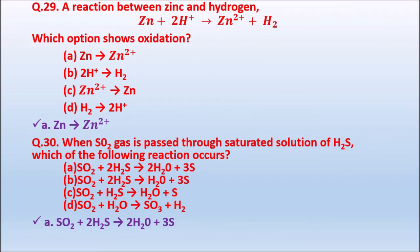Question 29: In the reaction Zn + 2H⁺ → Zn²⁺ + H₂, which option shows oxidation? A: Zn → Zn²⁺ + 2e⁻; B: 2H⁺ → H₂; C: Zn²⁺ → Zn; D: H₂ → 2H⁺. The correct answer is A — Zn → Zn²⁺ shows oxidation.